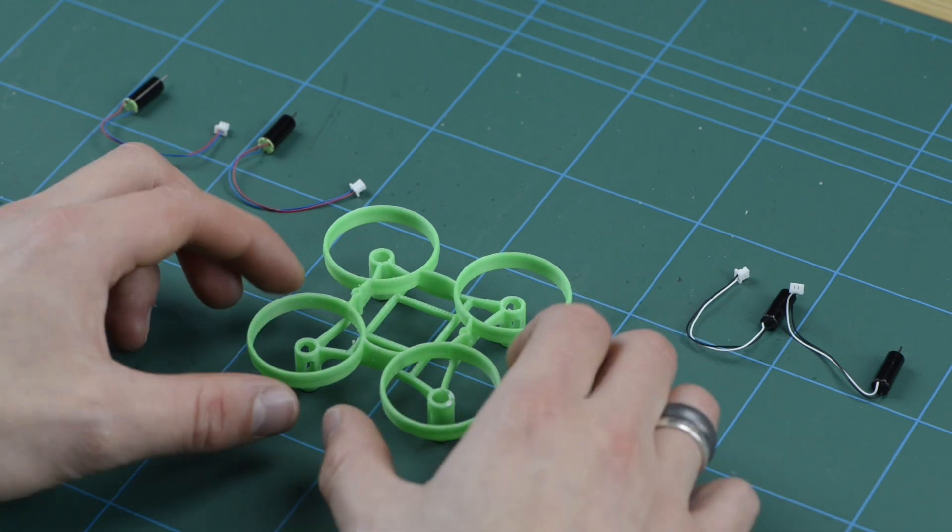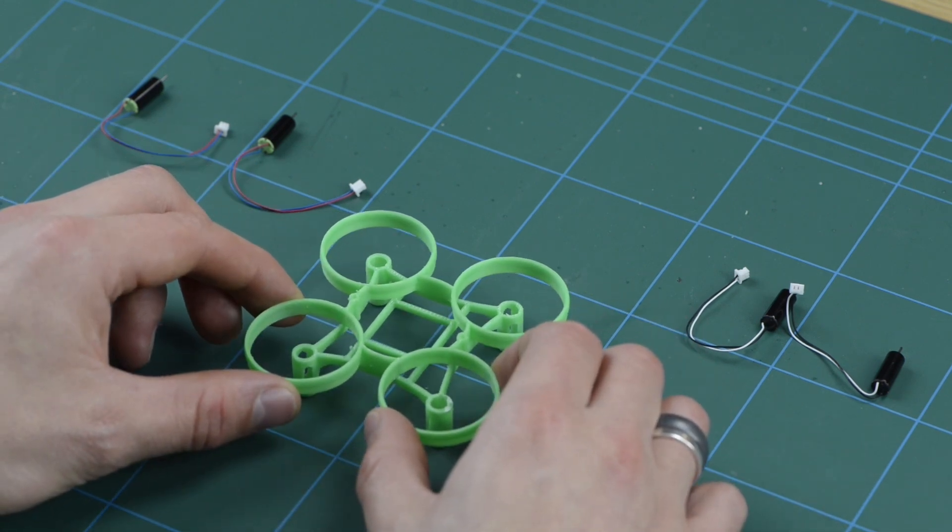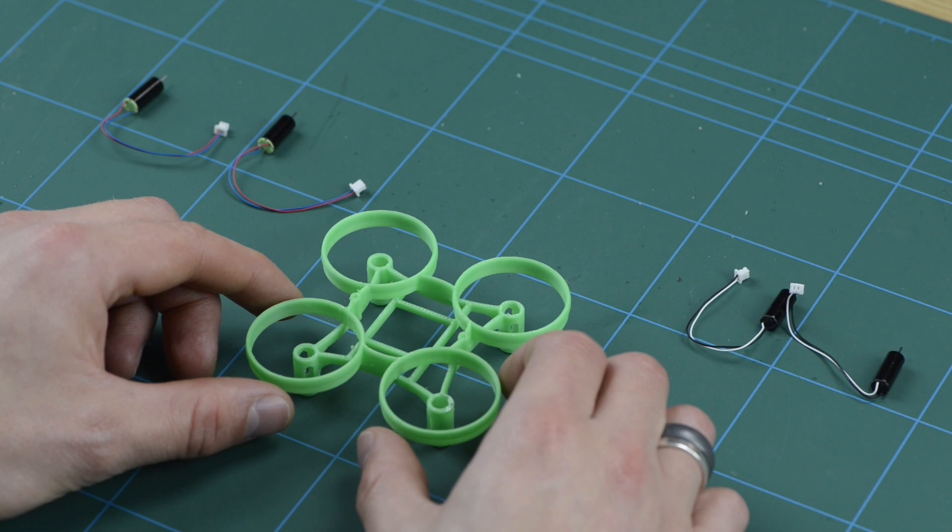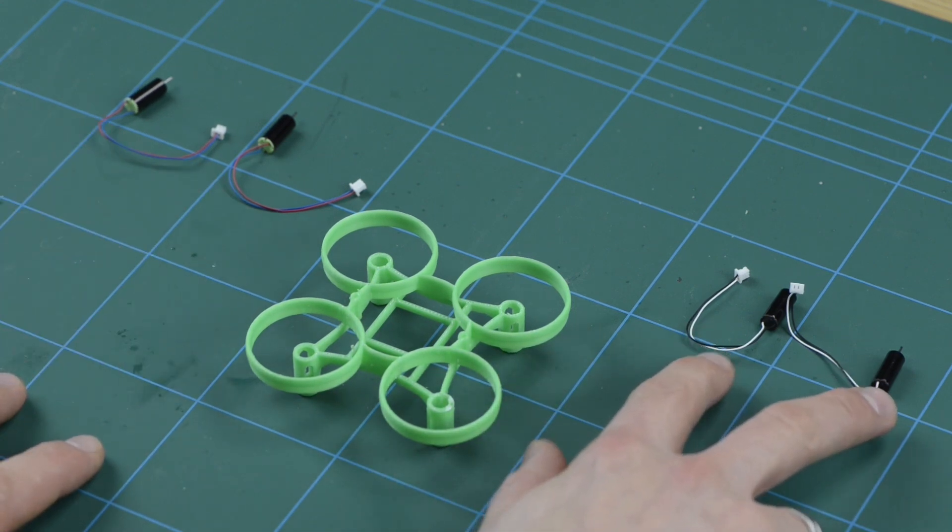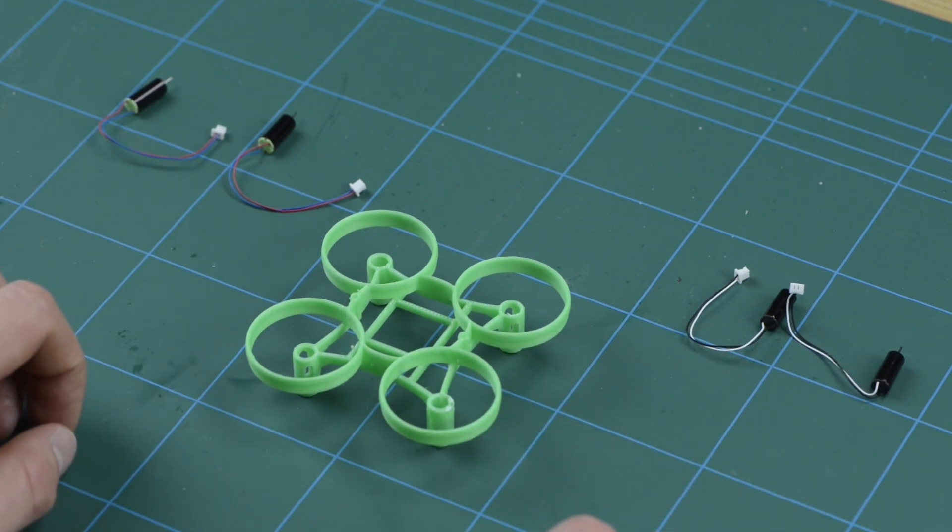Now we've cleaned up our 3D printed frame, we need to fit the motors. So for this you're going to need a pair of clockwise motors, which are the ones with the red and blue wires, and a pair of counter-clockwise motors, which are the ones with the white and black wires. And the counter-clockwise motors need to be in opposite corners to each other on the frame.